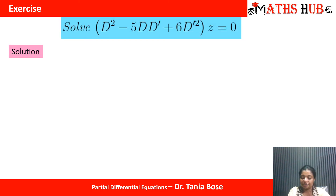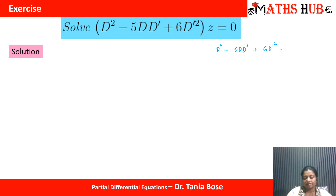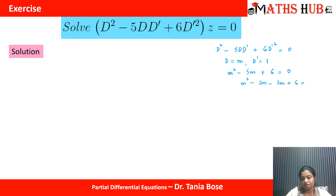Let us solve: (D² − 5DD' + 6D'²)z = 0. The auxiliary equation is D² − 5DD' + 6D'² = 0. Putting D = m and D' = 1 gives m² − 5m + 6 = 0, which factors as (m − 3)(m − 2) = 0.